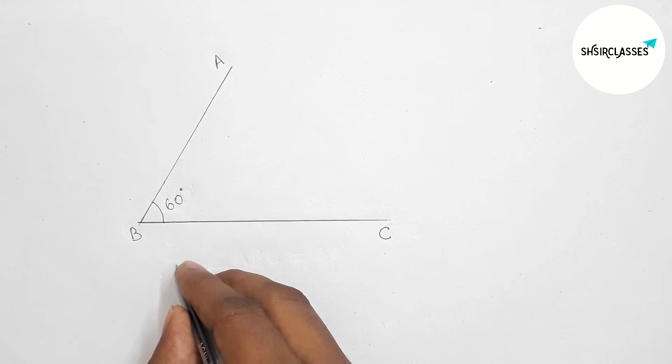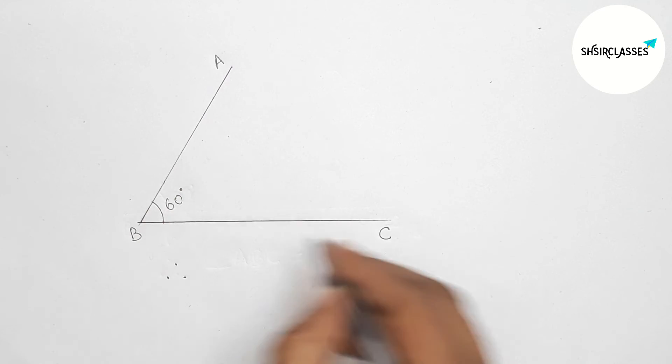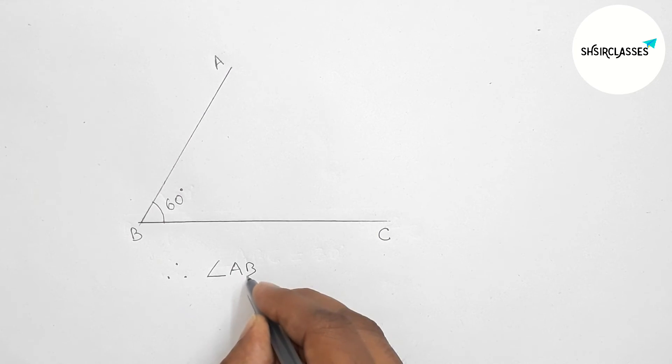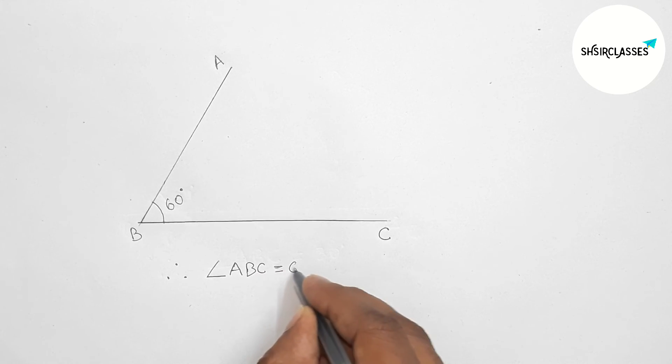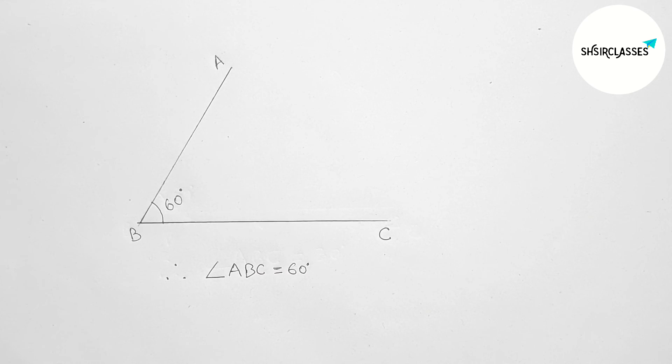So now angle ABC, therefore angle ABC, this is equal to 60 degree angle.